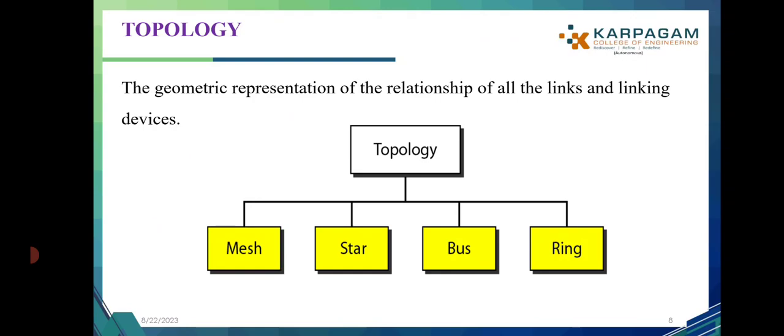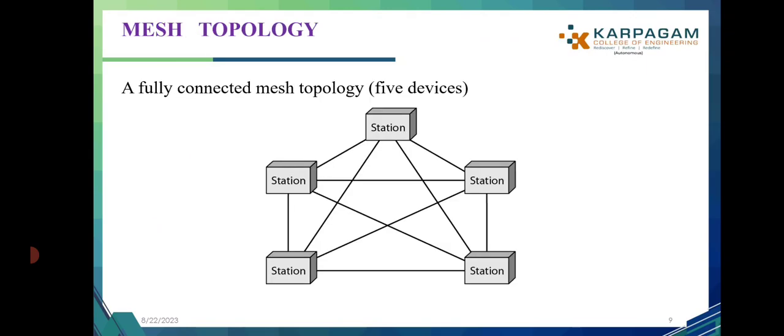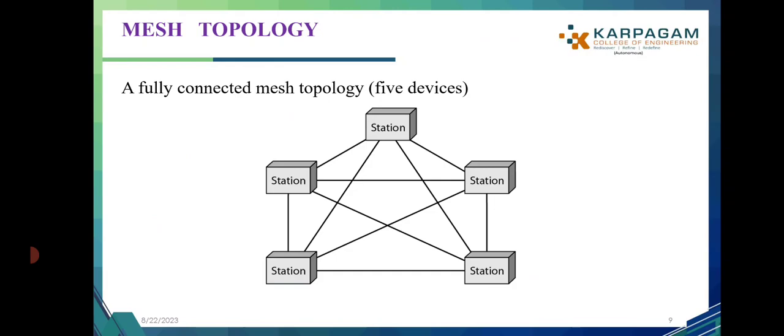The dedicated link carries traffic only between the two devices it connects. The advantages of mesh topology are: it can eliminate traffic, it is robust, and it provides security. The disadvantage is that more cables are needed and installation and reconnection are difficult. An application is telephone regional offices, where each regional office needs to be connected to every other regional office.